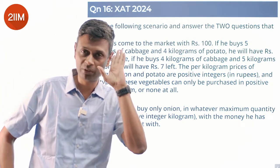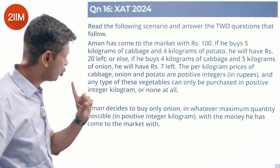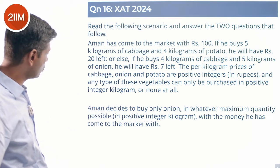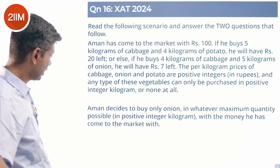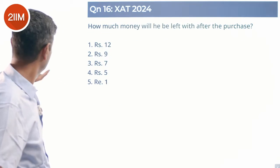You cannot buy 1.3 kilograms of anything. Very helpful, an integer solution question. Aman decides to buy only onion in whatever maximum quantity possible with the money he has come to the market with. Let's do this. Let's frame the equations.